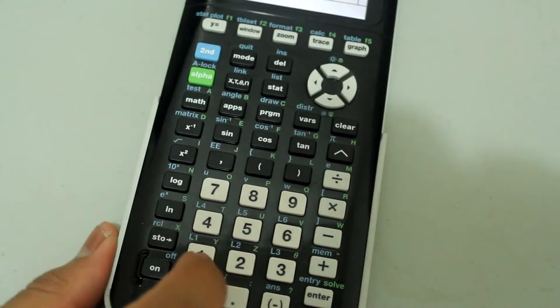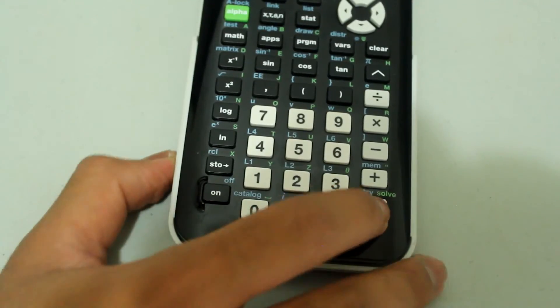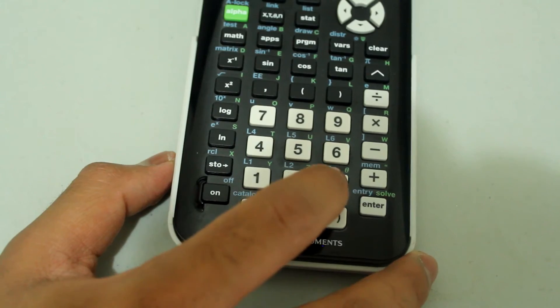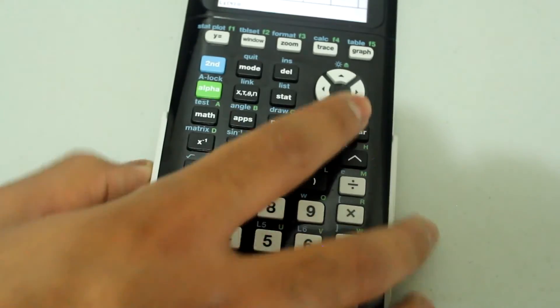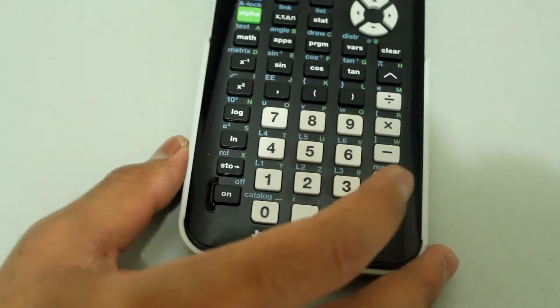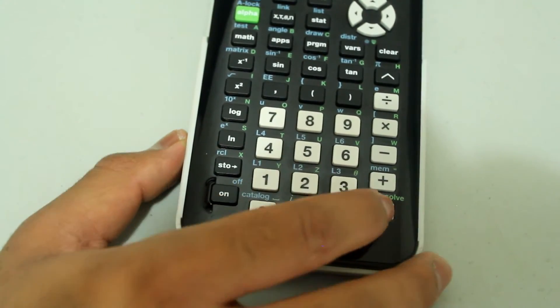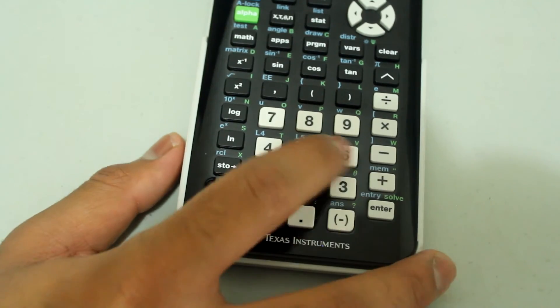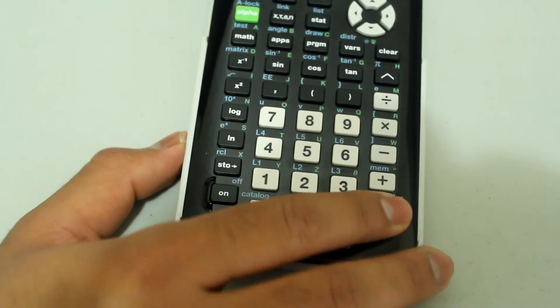So L1, I'm going to type in 1 and then press enter, 2, enter, 3, enter. And now I'm going to arrow over to L2. I'm going to type in just a few values, 2, enter, 5, enter, 6, enter.